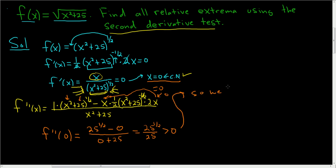So we end up with 25 to the one-half over 25, which is positive. So we have a min at x equals zero. That's the second derivative test. You find the critical numbers, which we did. To find the critical numbers, you take the first derivative, set it equal to zero. Take the second derivative, plug in your critical number. If it's positive, you have a min. If it's negative, you have a max. So we have a min at x equals zero.